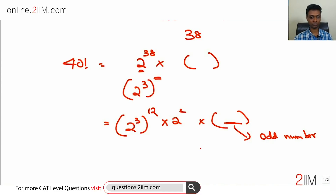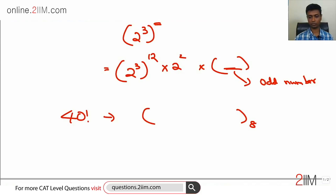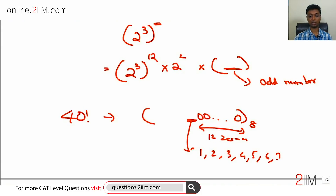So if 40 factorial is expressed in base 8 form, it will have 12 trailing zeros, because 8^12 divides it but 8^13 does not. However, remember that is not what we have been asked — we have been asked what is the last non-zero digit. That digit is one of 1, 2, 3, 4, 5, 6, or 7, and our job is to find exactly which one it is.